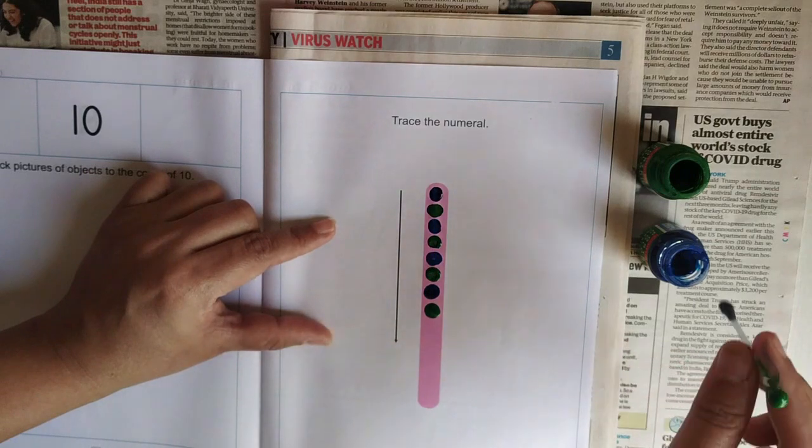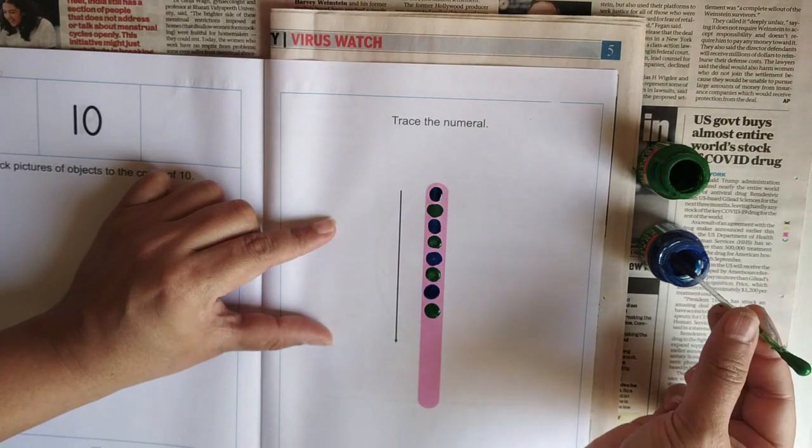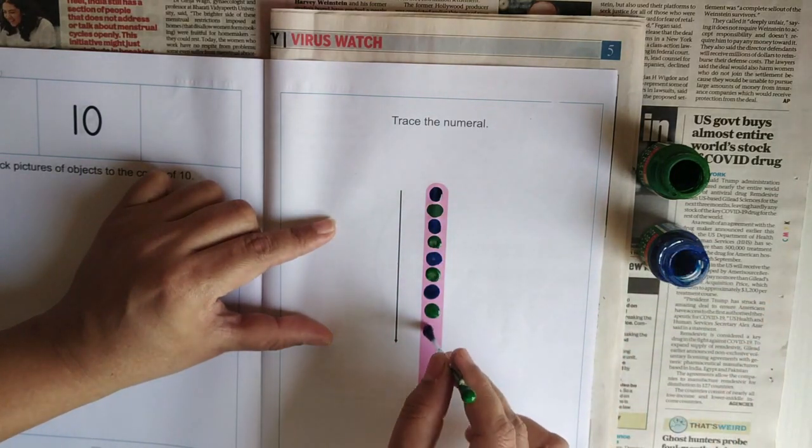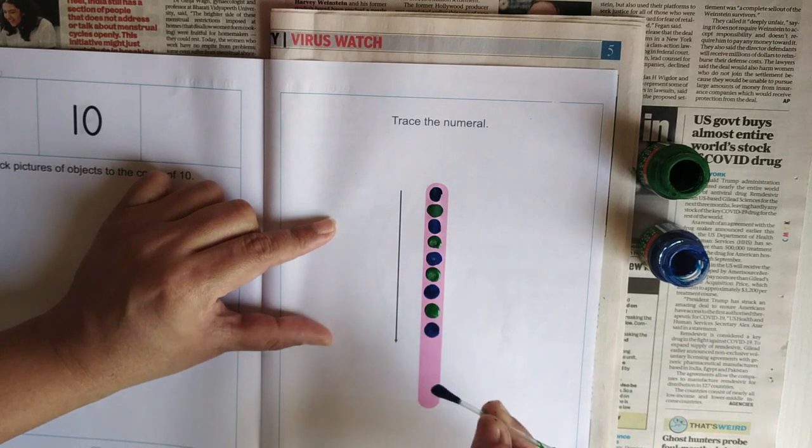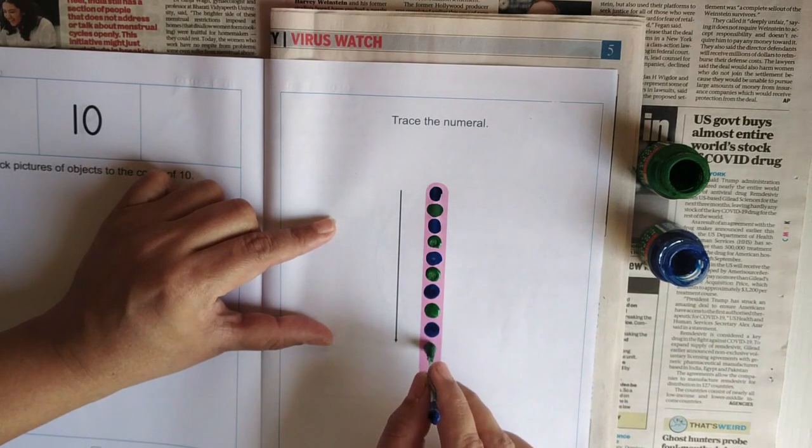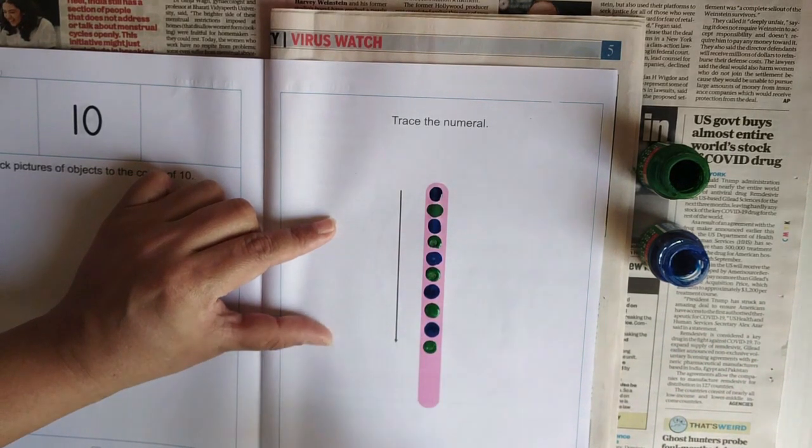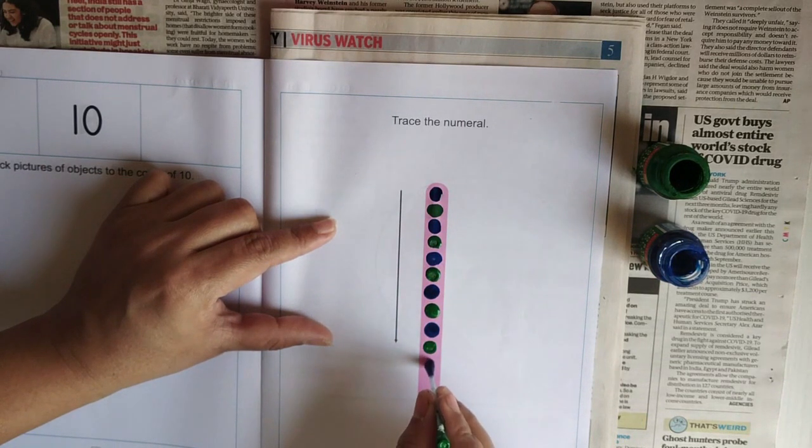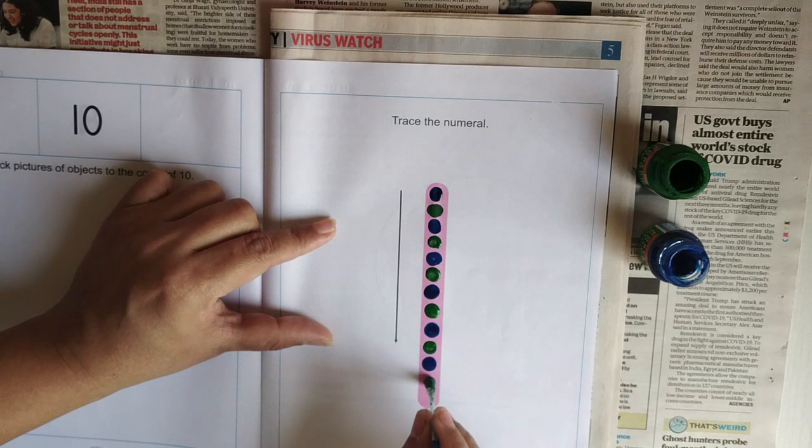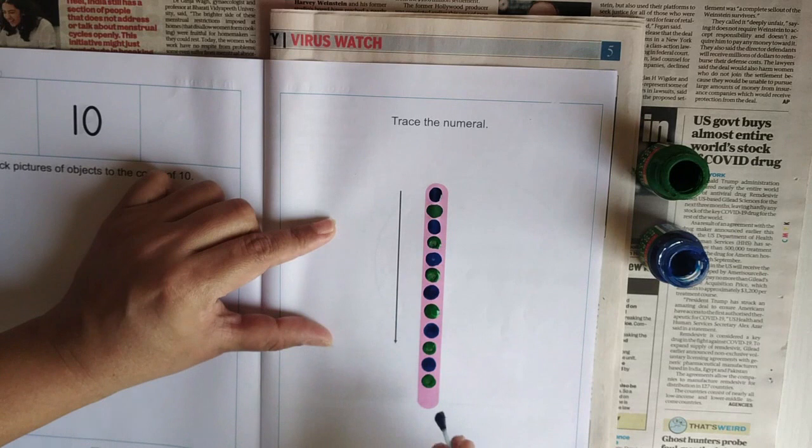And I am doing the activity. Similar way, even you have to do the activity. My paint did not come out, children. Now I am done. Nice, now it is number one.